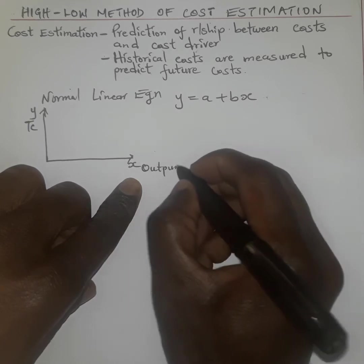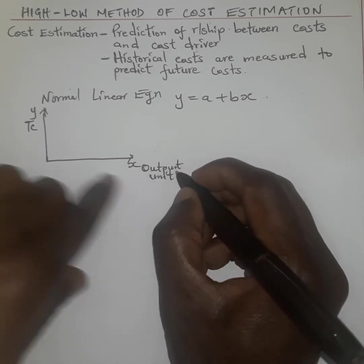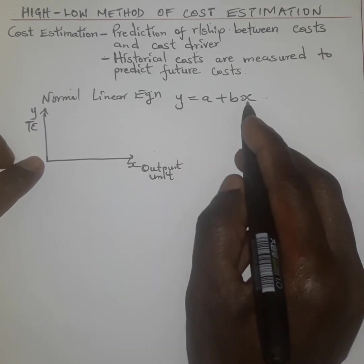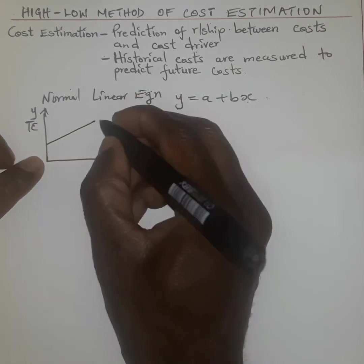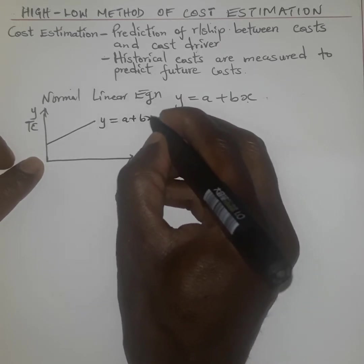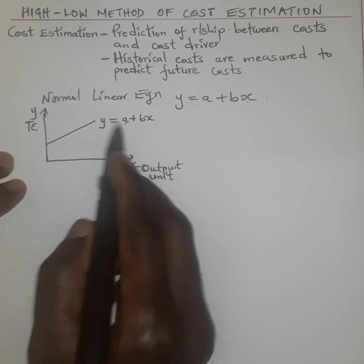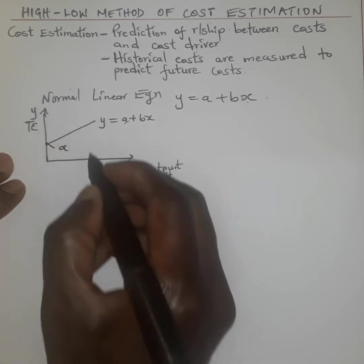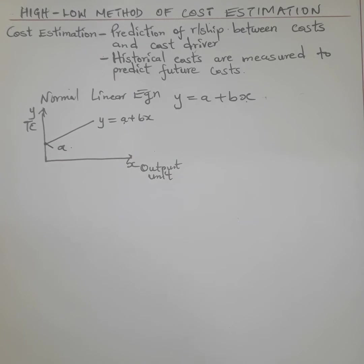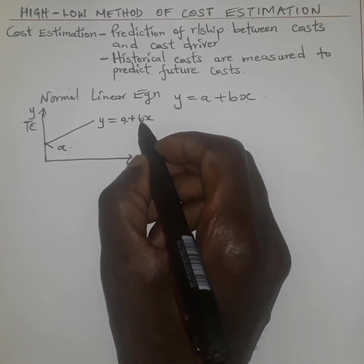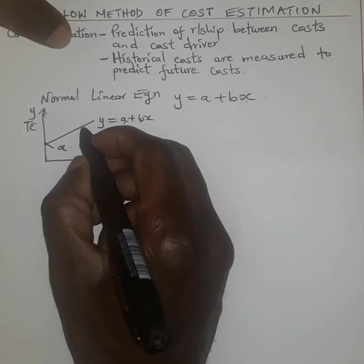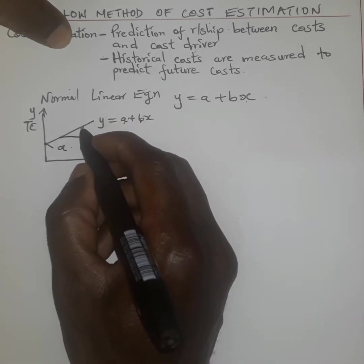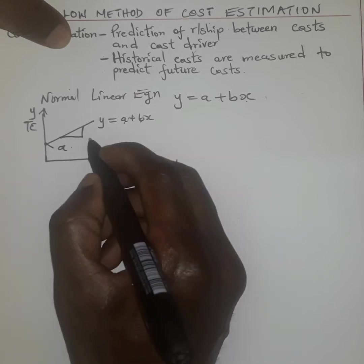Every output unit corresponds to a total cost of production. When we plot this graph, we have y and x with the equation y = a + bx. The value of 'a' is normally the value at the y-intercept, which gives us the fixed component. When we talk about 'b', it is the gradient of the line. The gradient measures the changes that take place along the line — specifically, the change in y divided by the change in x.